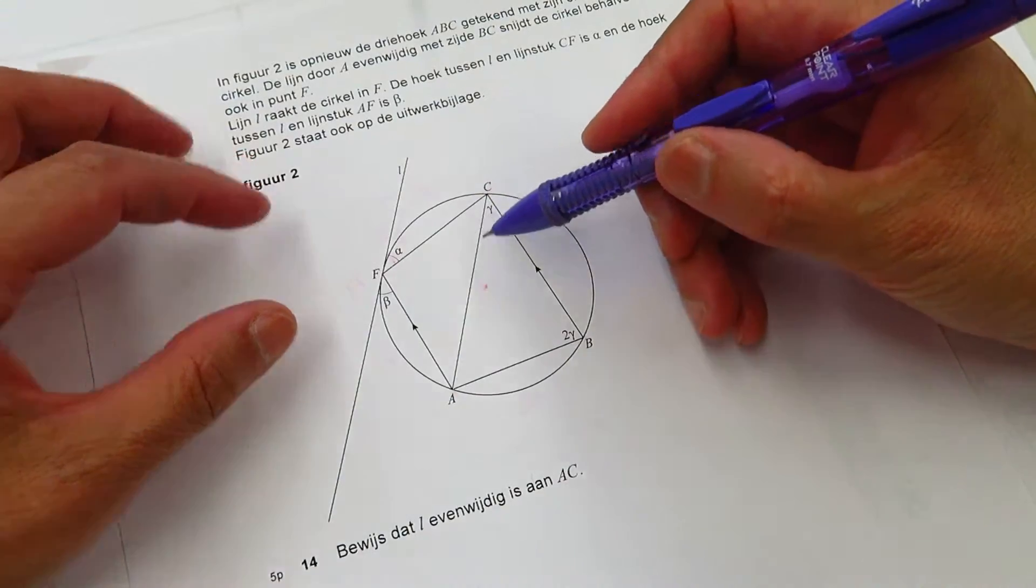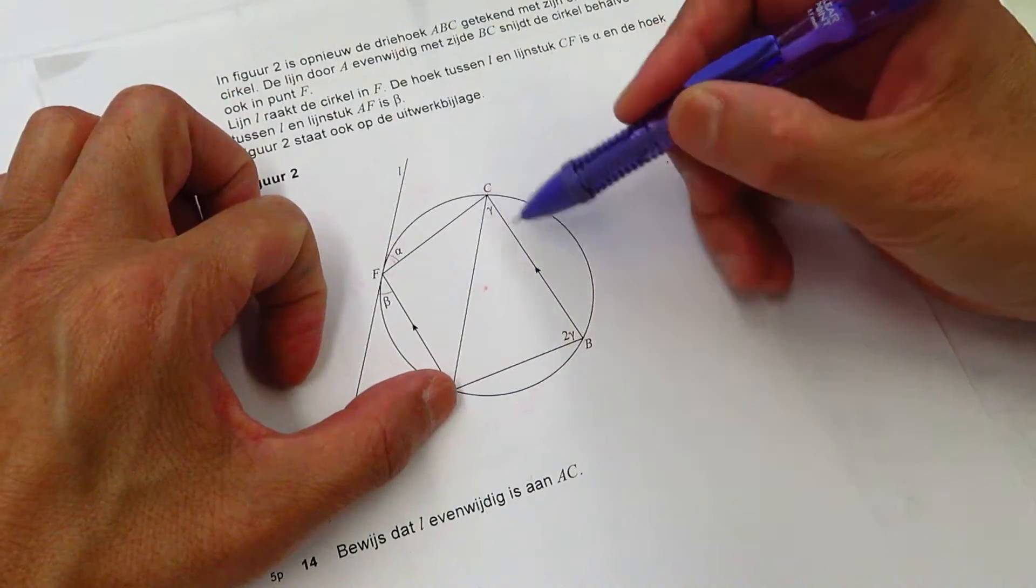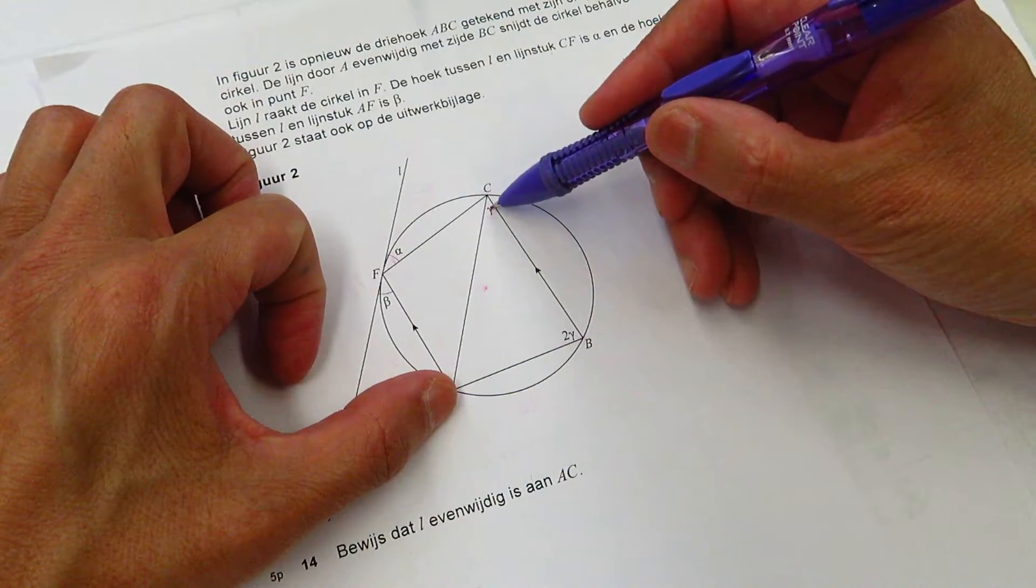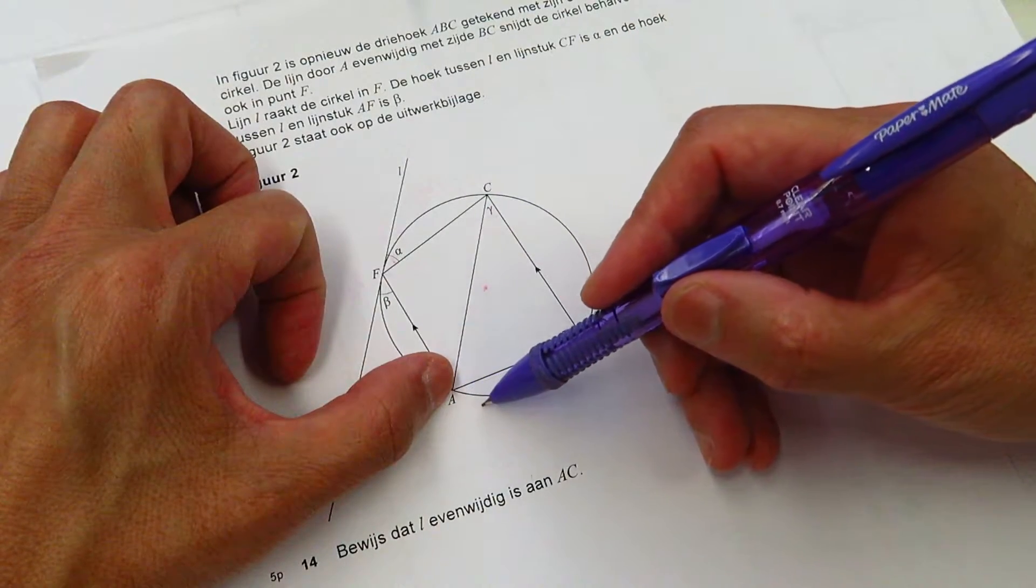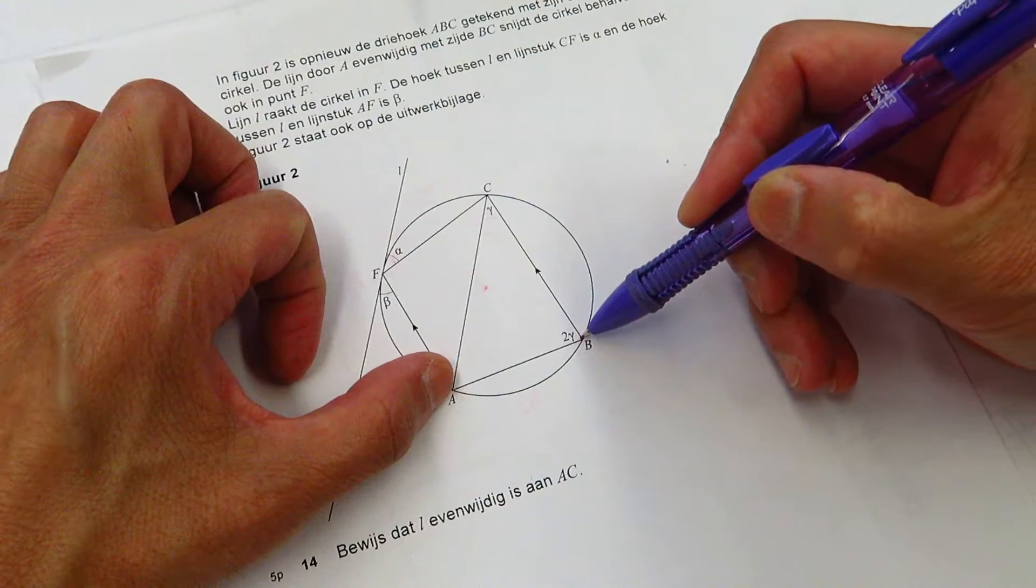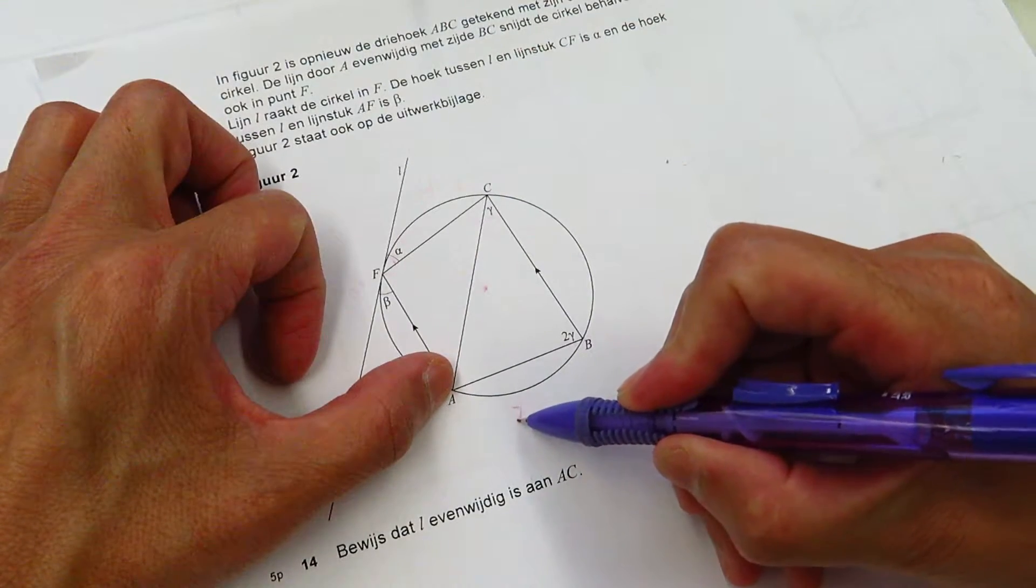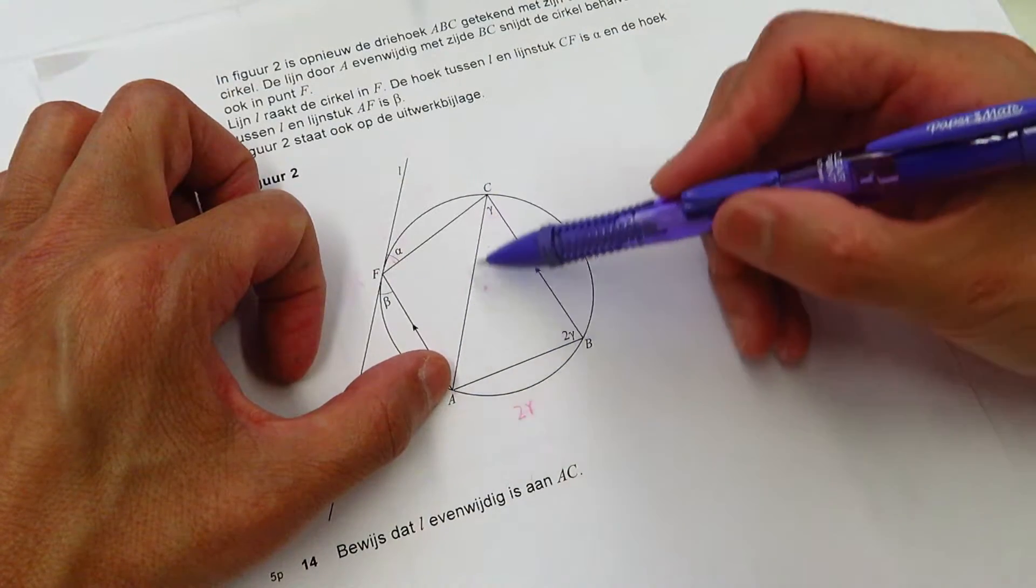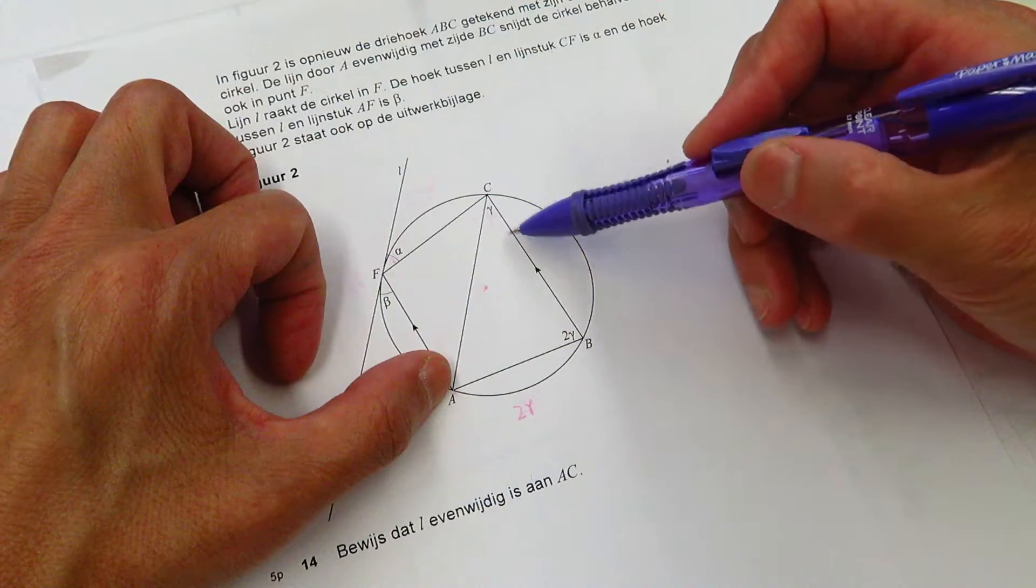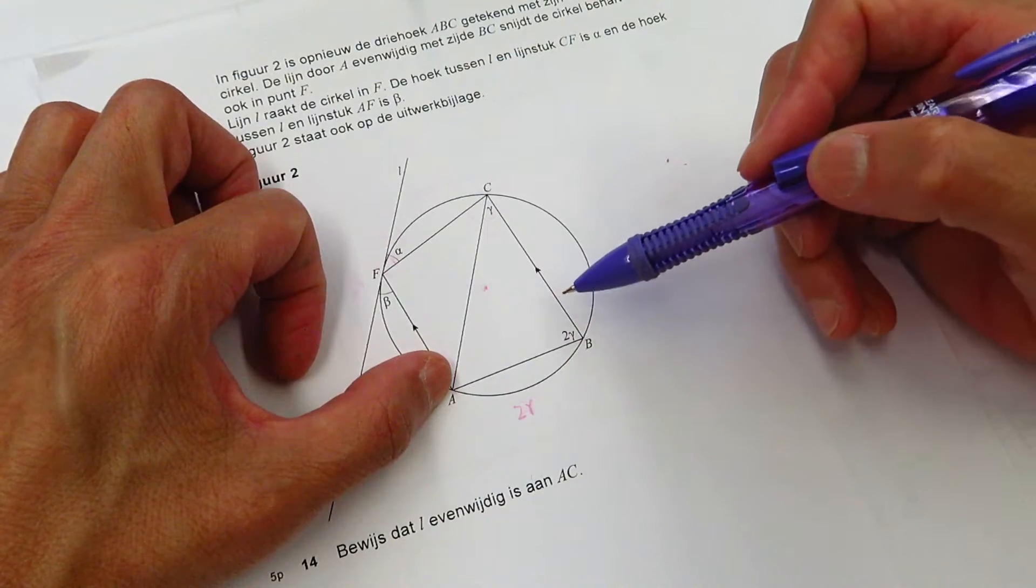First, we know the angle ACB is gamma. What do we know? We know the arc AB is 2 gamma, right? Because this is the rule of inscribed angle.